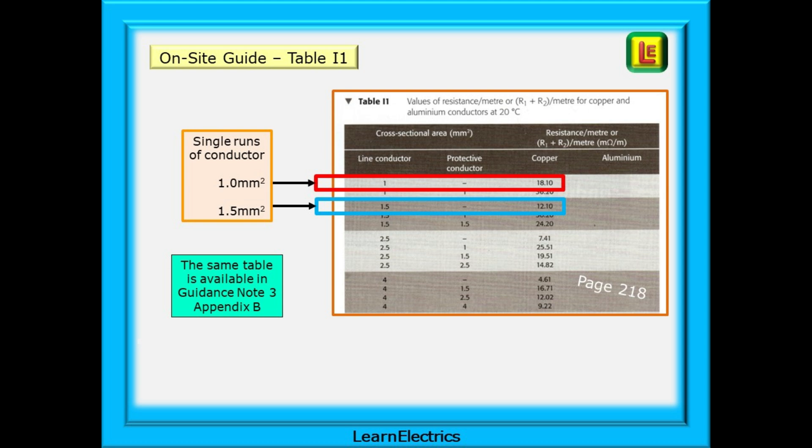In this video we will use data from the on-site guide table I1 on page 218. The same data is also available in guidance note 3 appendix B. We've used the data for single runs of conductor one-way runs to make calculating easier. The single run figures for 1 millimeter and 1.5 millimeter cable are highlighted here.